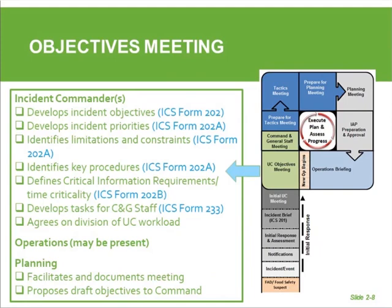The Incident Commanders develop their incident objectives, recorded on ICS form 202, and discuss incident priorities, which have their own form — the 202A. They identify limitations and constraints, key procedures, protocols, and define critical information requirements, recorded on ICS form 202B. They also need to develop tasks for command staff, which is the open action tracker recorded on ICS form 233. Additionally, the incident commanders agree on division of workload for themselves, so the two commanders are not stepping all over each other.